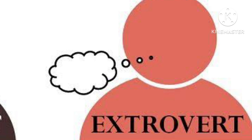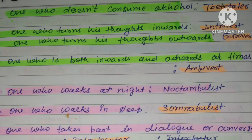The prefix 'ex' means outside, while 'in' means inside — so understanding the root helps us easily catch the word's meaning. An extrovert is a very confident, very friendly person. However, some people depend on company or mood — sometimes they can be introverted, sometimes extroverted.